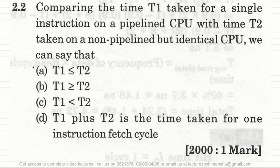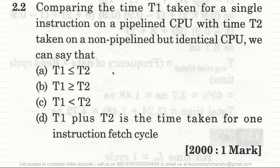The question compares t1, the time taken for a single instruction on a pipelined CPU, with t2 taken for a non-pipelined but identical CPU. The options are: A) t1 ≤ t2, B) t1 ≥ t2, C) t1 < t2, and D) t1 + t2 is the time taken for one instruction fetch cycle.